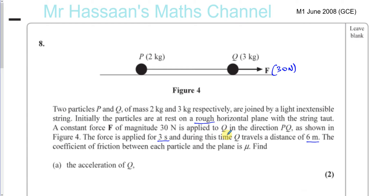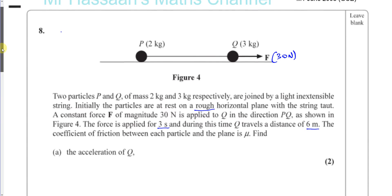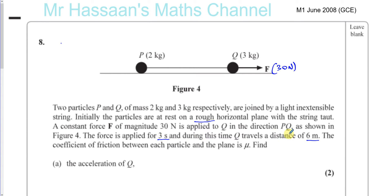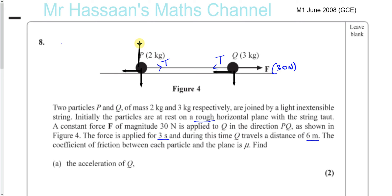Find the acceleration of Q. In the first 3 seconds it has travelled a distance of 6 metres, so let's put some forces on here. We know it's a rough plane, so there's a tension in the string, a frictional force acting on Q, and a frictional force acting on P. We also have the weight of P, the weight of Q, and the reaction forces at P and Q.